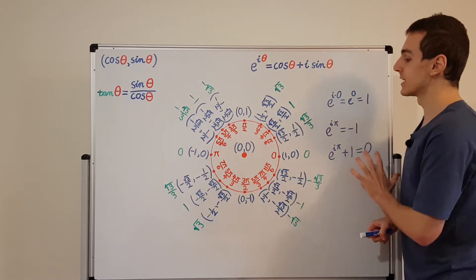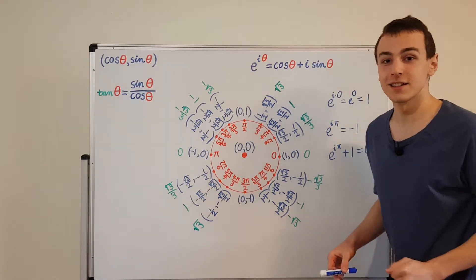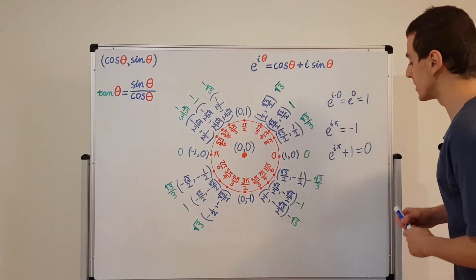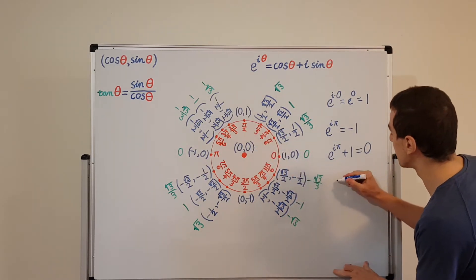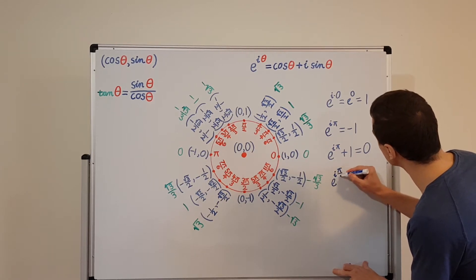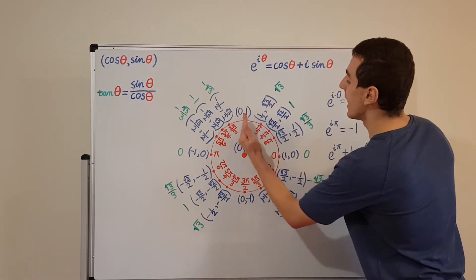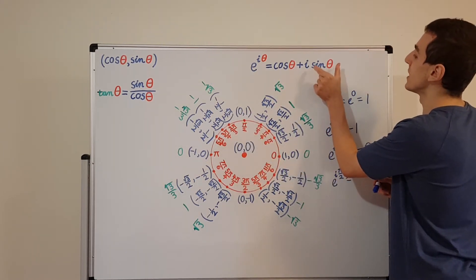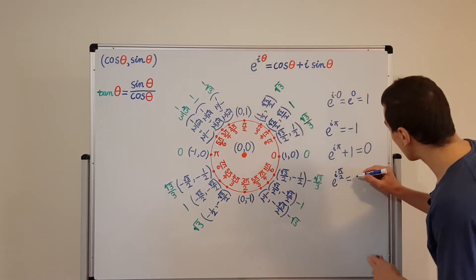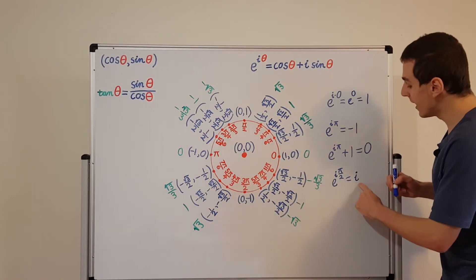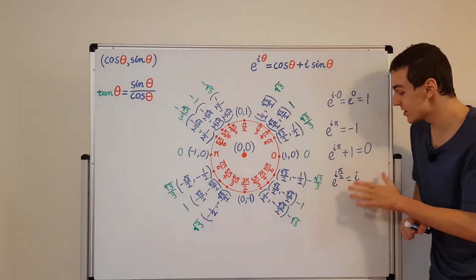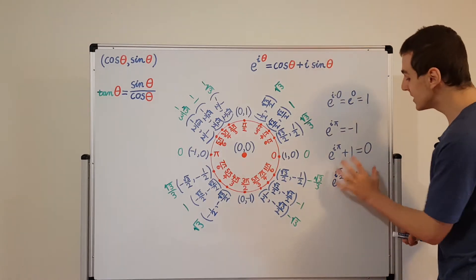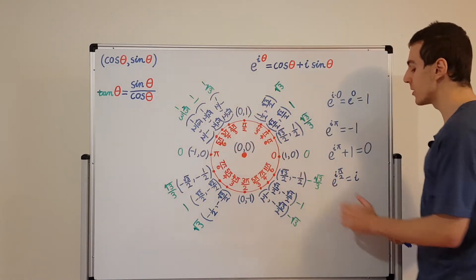Those are the simple cases where we're on the real axis. Now let's look at what happens on the imaginary axis — the unit circle intersects the imaginary axis at two points as well. Let's put in pi on two radians as our angle theta, giving us e to the i pi on two. Going around to that point, the real component is zero and the imaginary component is one. So the imaginary component one multiplies the imaginary unit i, leaving us with just i. So i is exactly the same as e to the i pi on two.